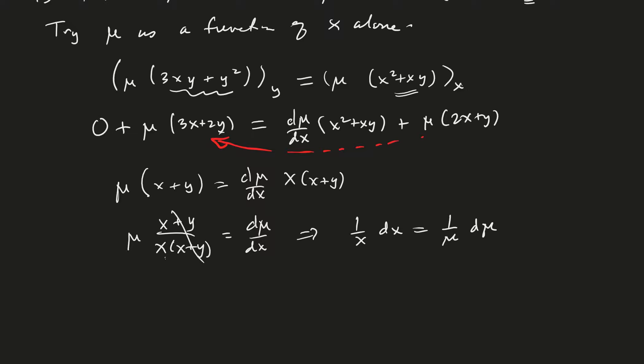And so, integrating both sides, we get natural log of x equals natural log of mu. Now, just like the integrating factor before, we don't need a plus c because we just need one representative of this class, say. Okay, so then the final step would be to exponentiate both sides, and we see that mu is equal to x.